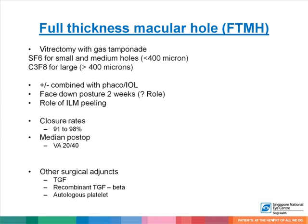In the treatment of full thickness macular hole, we perform vitrectomy with gas tamponade — SF6 for small and medium holes and C3F8 for large holes. This procedure may be combined with phacoemulsification and lens implant. The patient has to posture face down for two weeks, and some surgeons also peel the internal limiting membrane. The closure rate is about 91% to 98%, and the median post-op VA is about 20/40. Other surgical adjuncts include transforming growth factor, recombinant TGF-beta, or autologous platelet.